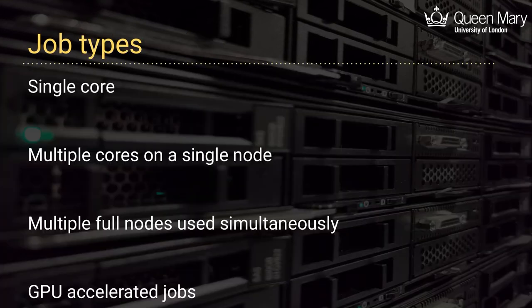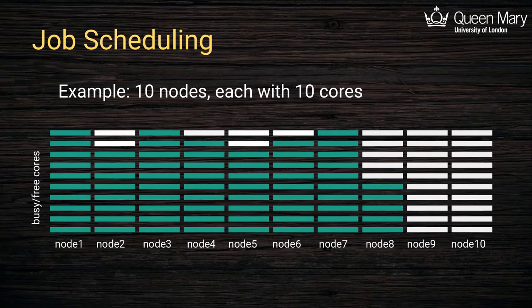The various job types available are: a single core job, a job that uses several cores at once where other jobs may be running on that node simultaneously but you have guaranteed resources, jobs that use a full node, jobs that can use multiple full nodes simultaneously, or jobs that use GPUs for acceleration.